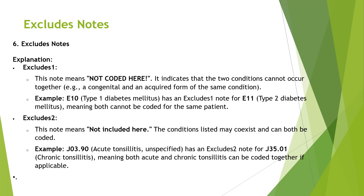Excludes 2 means 'not included here,' but both conditions can be coded together. For example, acute tonsillitis and chronic tonsillitis — if you check the notes for either, there is no Excludes 1 note. These conditions don't fall under Excludes 1, so both can be coded together.